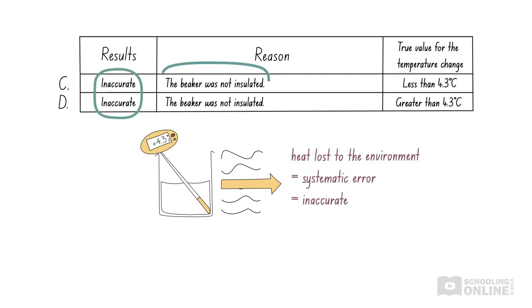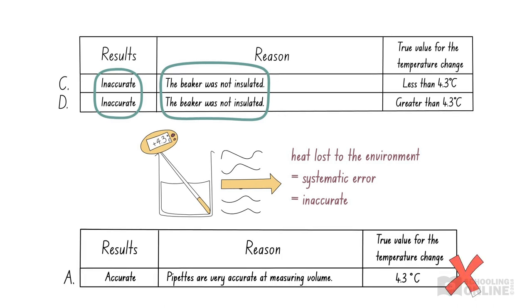Therefore, we have a systematic error and the results are inaccurate, which means that either options C or D are correct. This also negates the possibility of option A being correct, as it claimed the results are accurate when they are not.